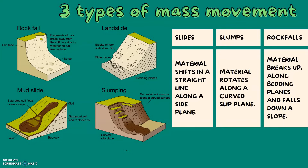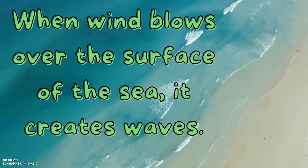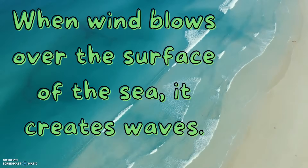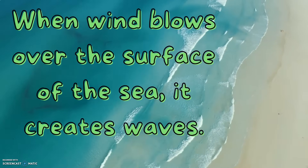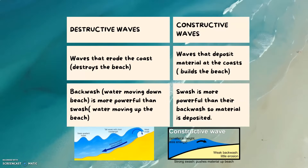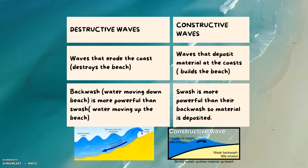Pause the video to look at and copy down the diagrams. When wind blows over the surface of the sea, it creates waves. There are two types of waves: destructive and constructive.